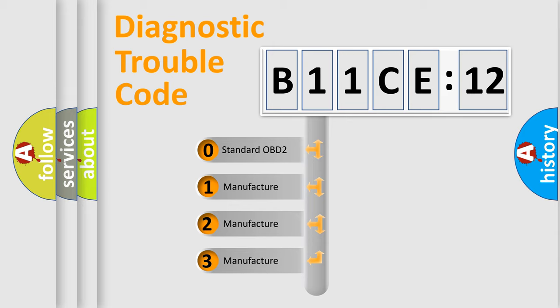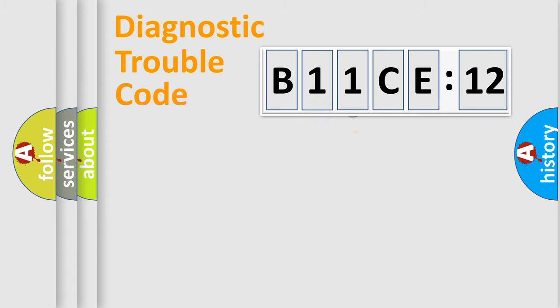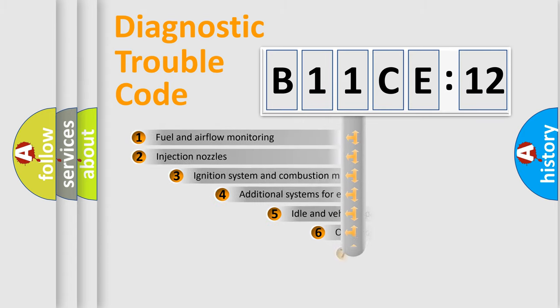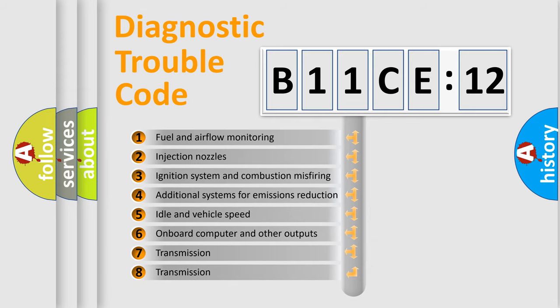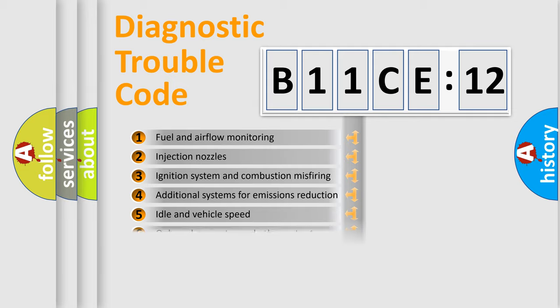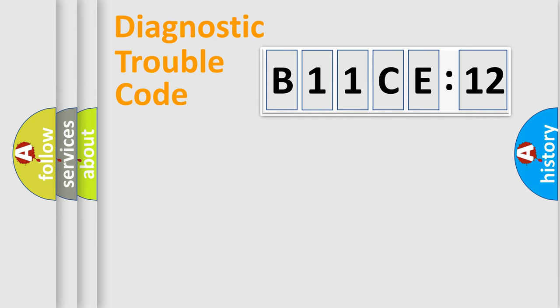If the second character is expressed as zero, it is a standardized error. In the case of numbers 1, 2, or 3, it is a manufacturer-specific error. The third character specifies a subset of errors. The distribution shown is valid only for the standardized DTC code. Only the last two characters define the specific fault of the group.